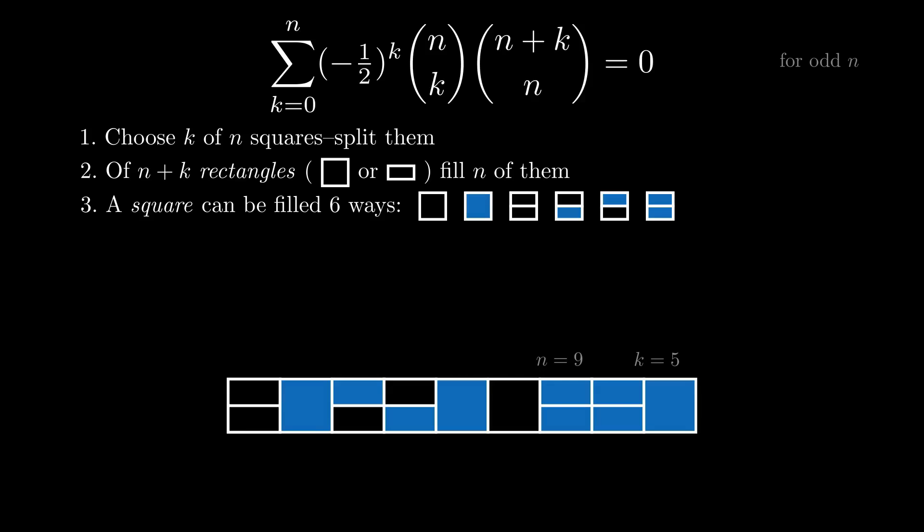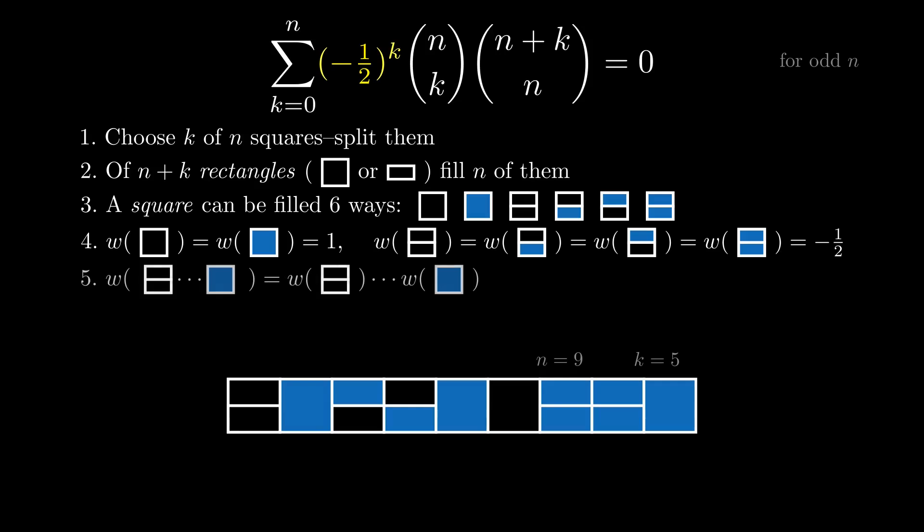Now we tackle the alternating and fraction part at the same time. Let's say the weight of a square is 1 if the square is unsplit, or minus a half if split, regardless of how it's filled. We're not physicists, so negative weight doesn't bother us. Let the weight of the filling of an entire strip be the product of the weights of the squares. When we have k split squares, the weight of the strip is minus a half to the k. Now we see that the sum counts the total weight of all fillings of n-long strips which have k split squares and n total filled rectangles.